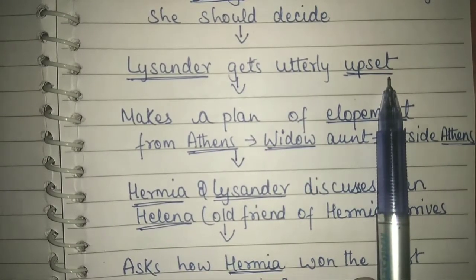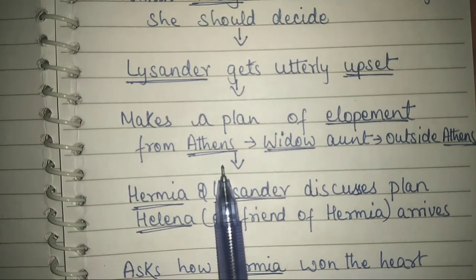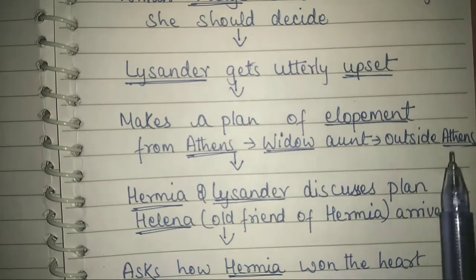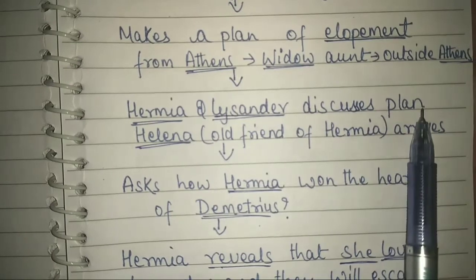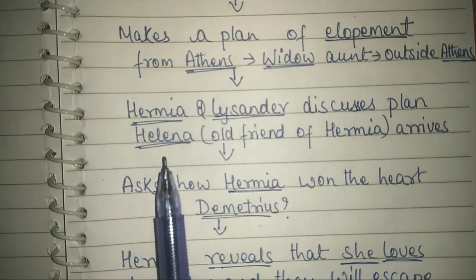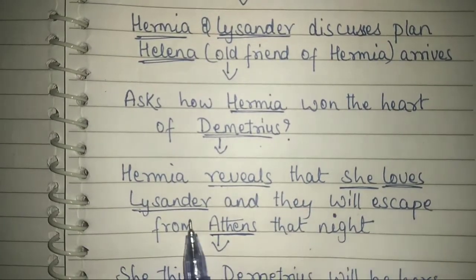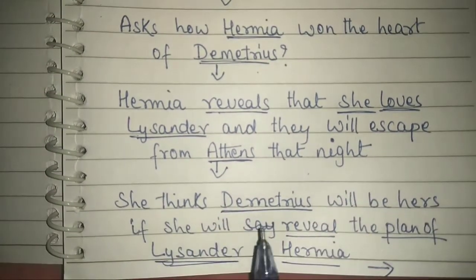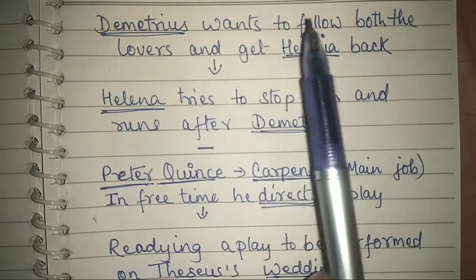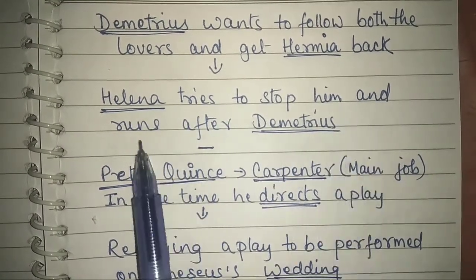Lysander was utterly upset because he tried to convince everyone but failed. Left with no other option than leaving Athens, he plans to leave at night and go to his widow aunt who stays outside Athens. While Hermia and Lysander were discussing their plan, Hermia's old friend Helena appears. Helena asks how Hermia won Demetrius's heart. Hermia reveals their escape plan, and Helena thinks that if she reveals this plan, Demetrius will be hers. But Demetrius wants to follow both the lovers to get back Hermia, and does not love Helena at all. Helena tries to stop him and runs after Demetrius into the forest.